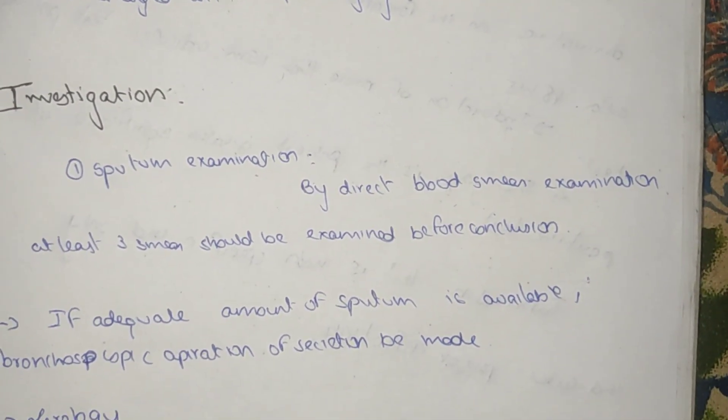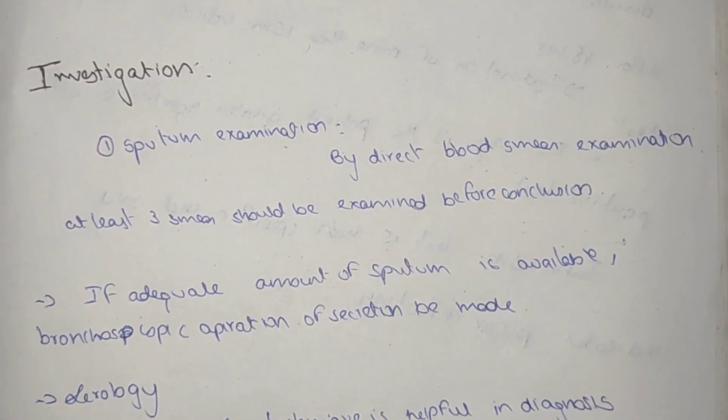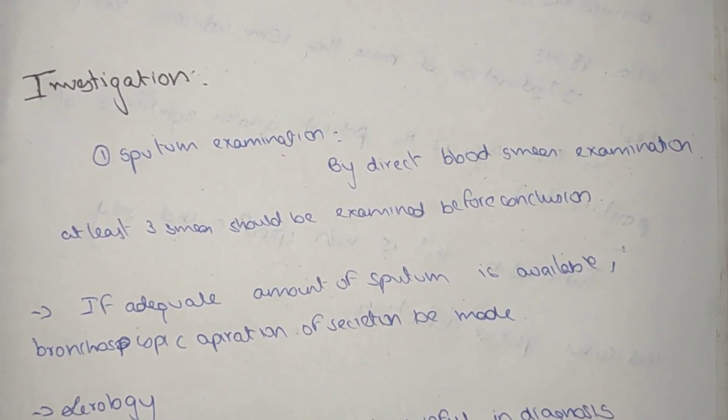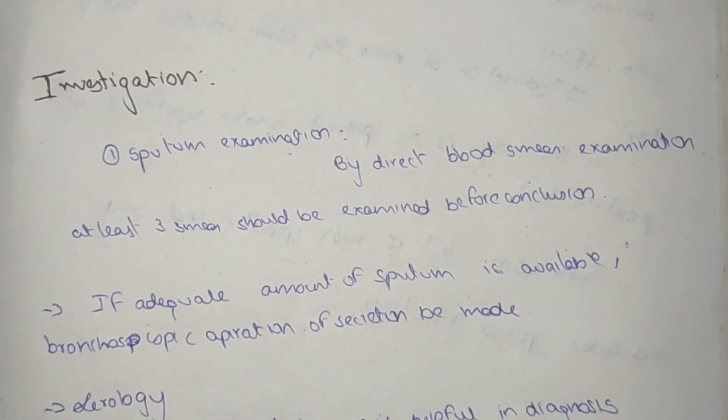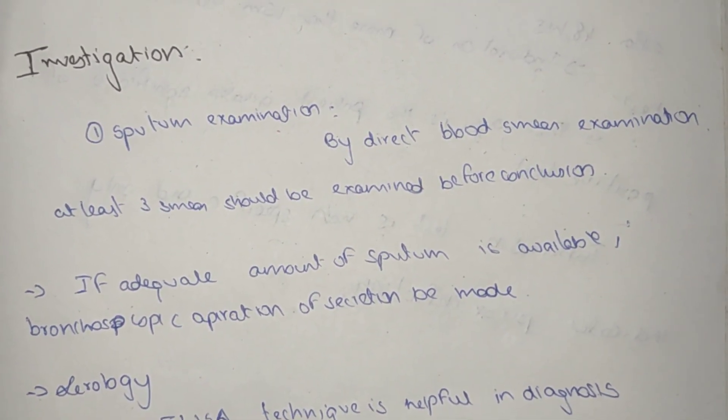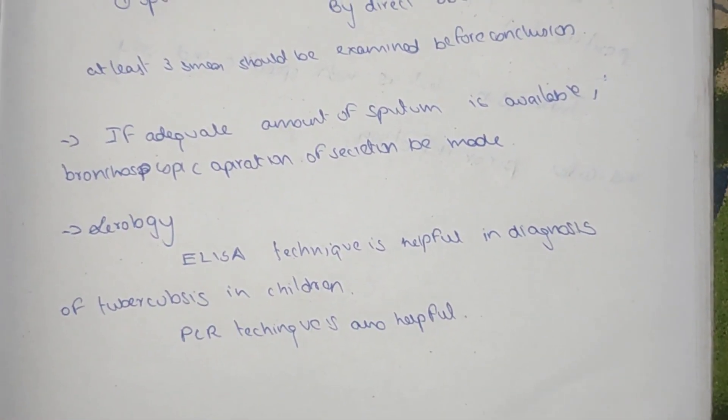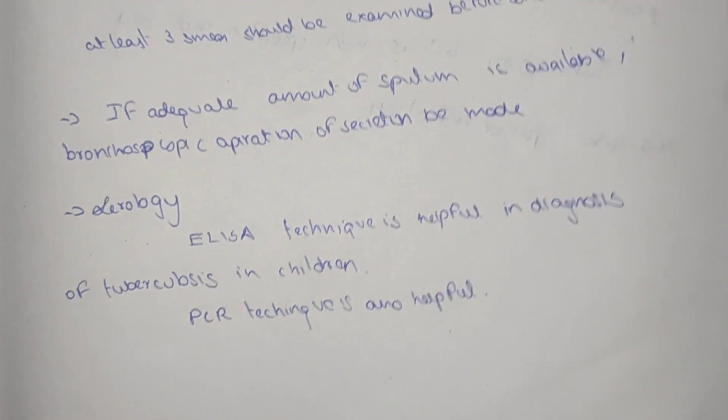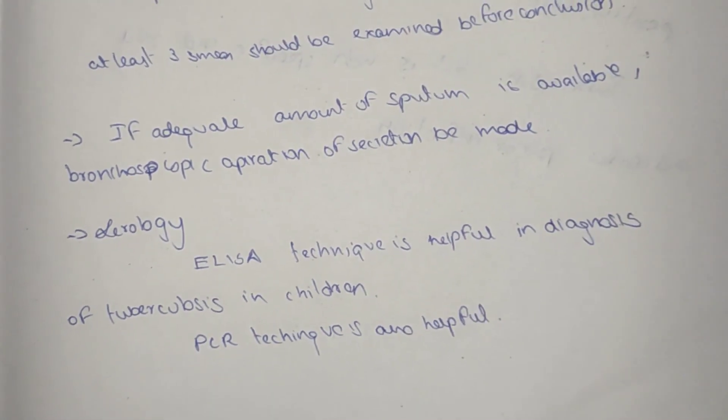Investigation: Sputum examination by direct blood smear, at least three smears should be examined. Sputum can be removed from bronchoscopic aspiration. Serology: ELISA test and PCR. PCR is one standard test for diagnosing tuberculosis. ELISA, enzyme-linked immunosorbent assay, is a technique helpful for diagnosis of tuberculosis in children.